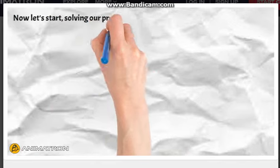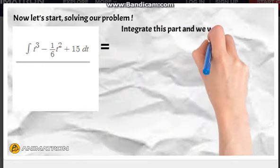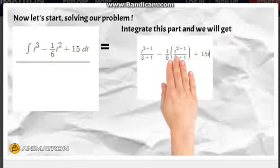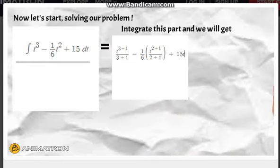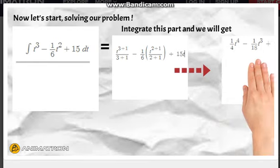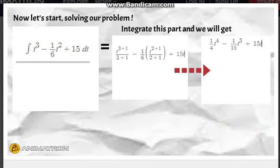And now we are ready. Let's start solving our problem. The integral of T³ - 16T² + 15 dT equals T raised to 3+1 over 3+1 minus 16 times T raised to 2+1 over 2+1 plus 15T.